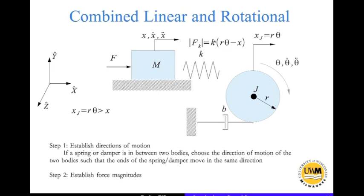If you look at this body, this is moving or rotating at a speed theta_dot. So this damper here, at this point, this point is moving in the negative X direction at rate X_J_dot.